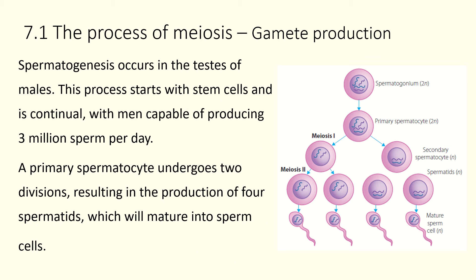For spermatogenesis in people with testes, this process is much more basic and constant. It starts with stem cells in the testes and happens continuously — men are capable of producing three million sperm a day, which is significant.